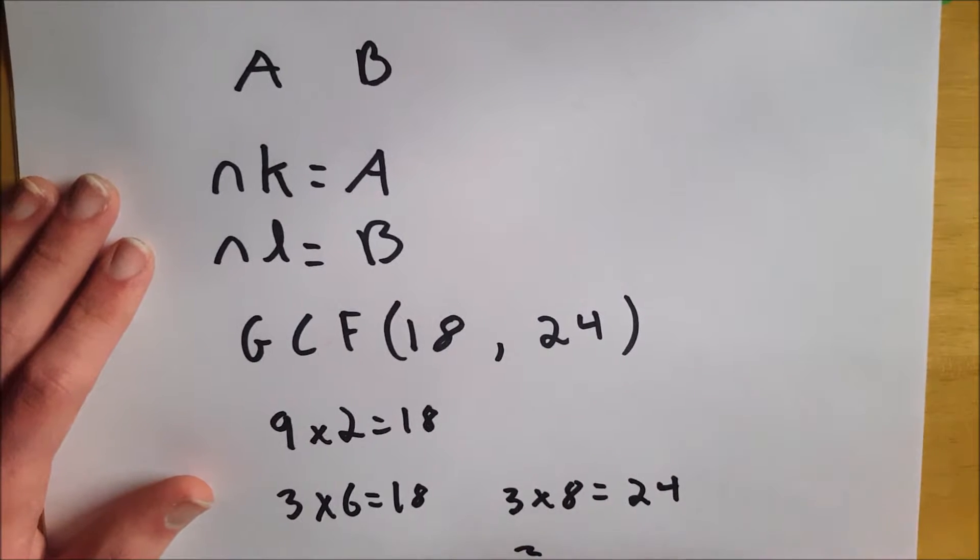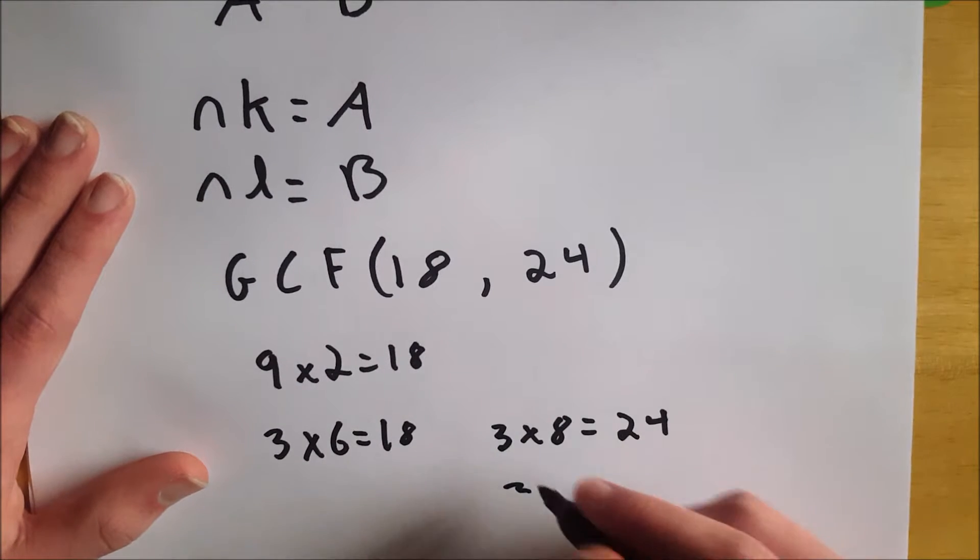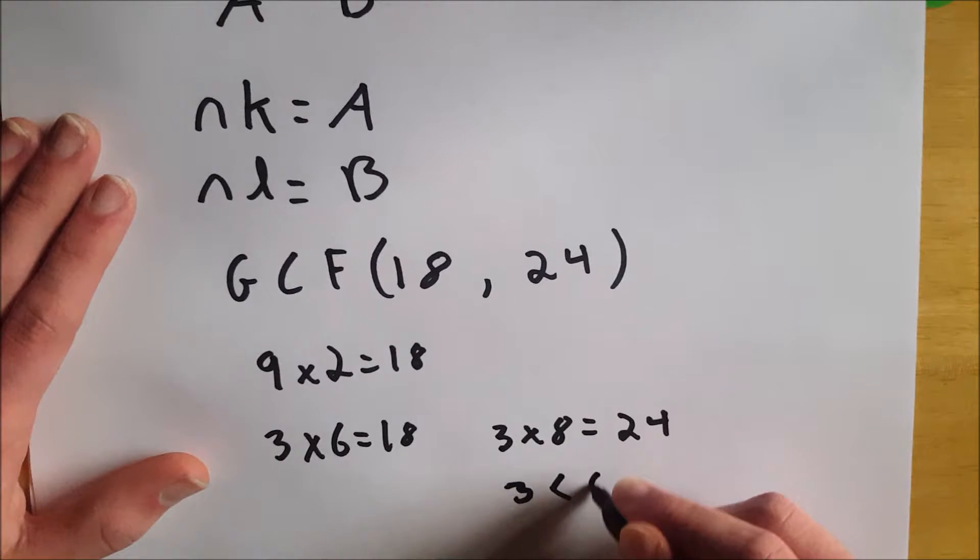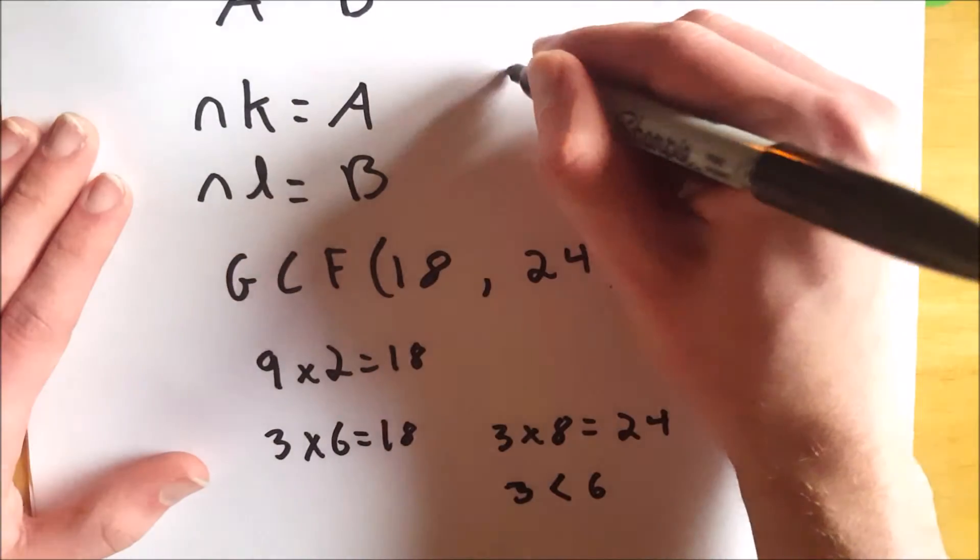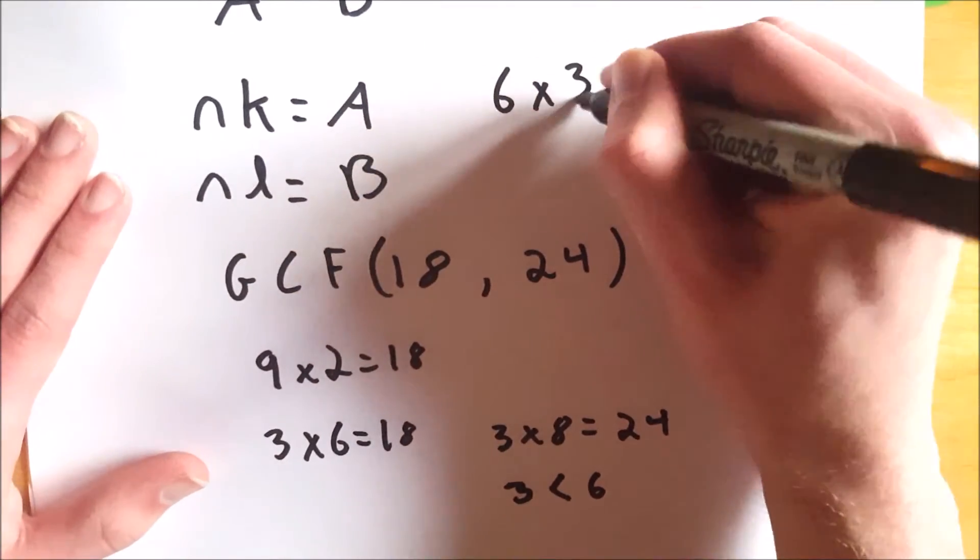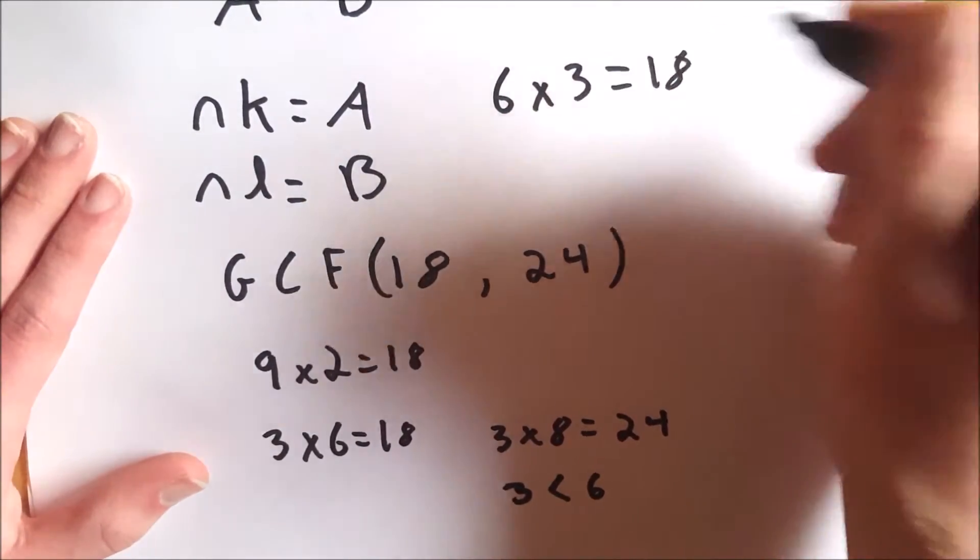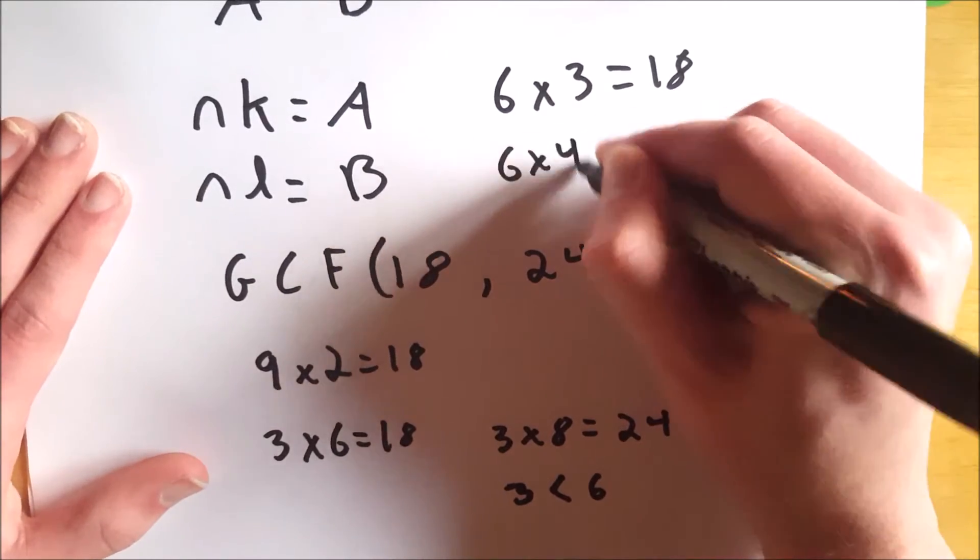But 3 is less than 6. And 6 also goes into 18 and 24 because 6 times 3 equals 18, and 6 times 4 equals 24.